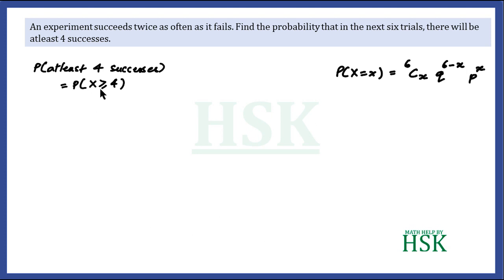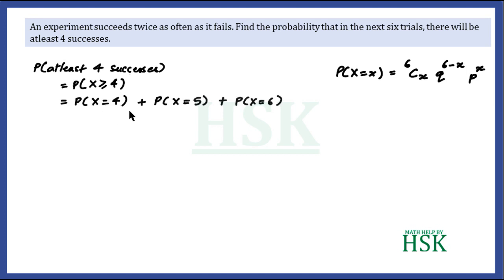At least four successes means a minimum of four successes are required; the maximum possible value here is six. So this means we require P(4 successes) + P(5 successes) + P(6 successes), and we add all three values. Placing x = 4 gives the probability of exactly four successes after substituting the values of p and q.